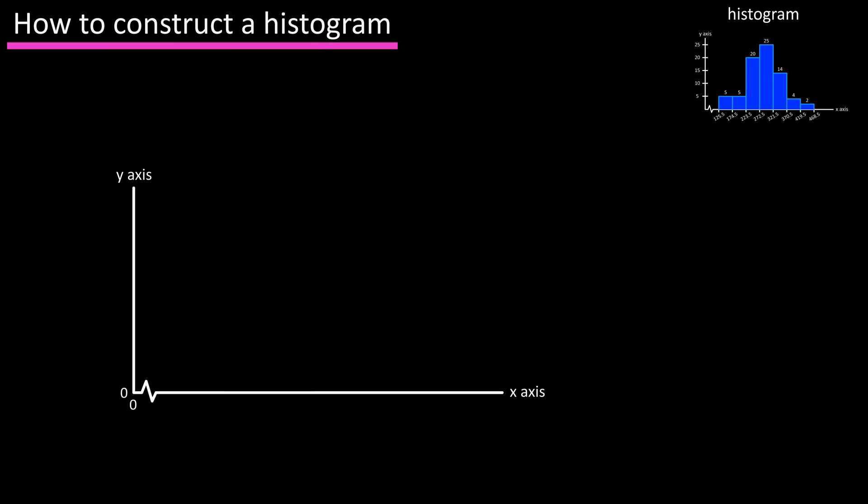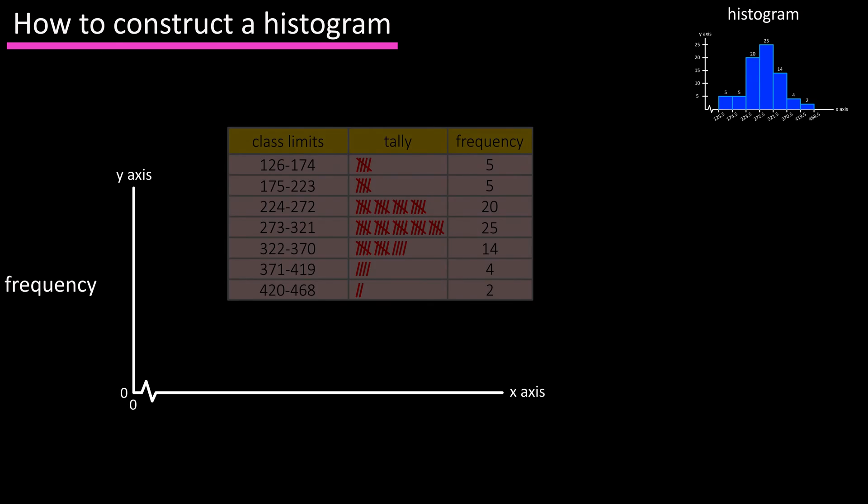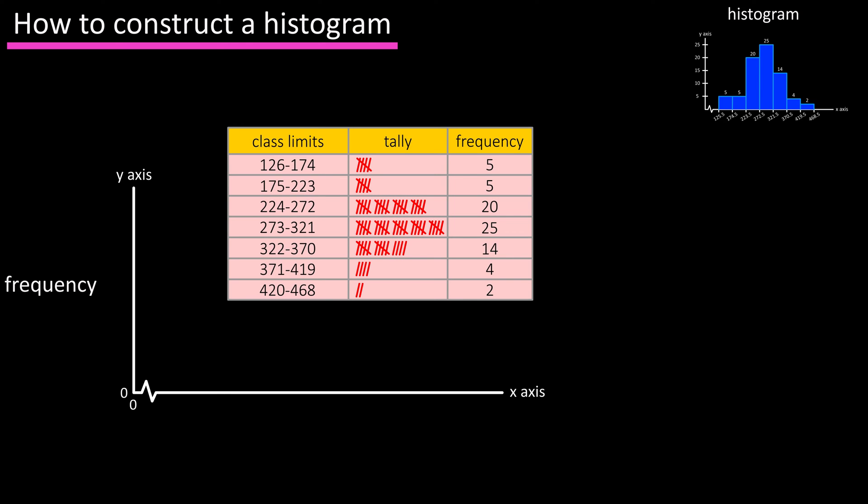Next we need to label the zeros, which is going to be where the x and y axes meet. Now we need to label both of these axes. The y-axis is easy, that's going to be the frequency or the amount of data points in each class. If you look at the table, the largest number in the frequency column is 25 for the fourth class. So knowing this, we can draw this line and mark it as 25, somewhere near the top of where our y axis ends.